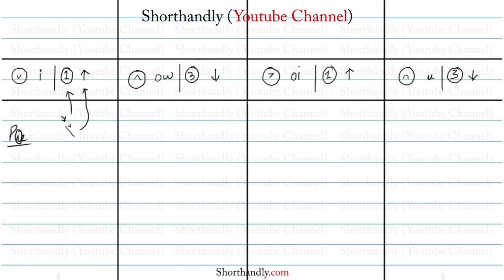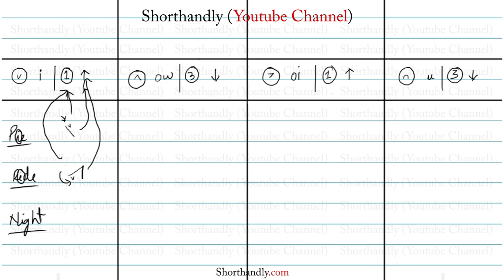Let's take another example: the word 'ride'. Here also we get the sound of 'i' just after the R consonant, so the word 'ride' is written with the outline above the line and the diphthong on the first place. Next, the word 'night' — we have the sound of 'i' just after the N consonant, so that's how we write the word 'night'.